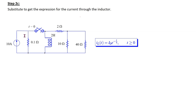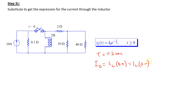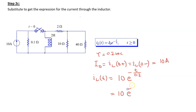Next, we can substitute to get the expression for the current through the inductor. The current has this form. Tau is given by 0.2 seconds and I0 is equal to IL(0 plus), which equals IL(0 minus), and for this problem the value was 10 amps. Substituting these values, the current through the inductor is given by 10 e raised to the power minus t over 0.2. This can be written as 10 e raised to the power minus 5t, because 1 over 0.2 is equal to 5. This expression is valid for time t greater than or equal to 0.